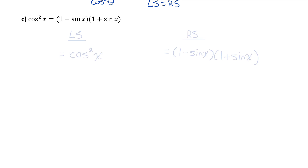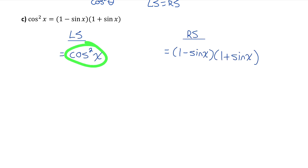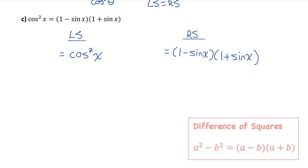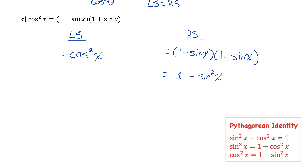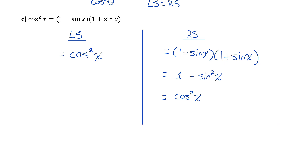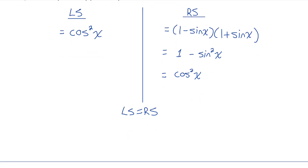I'll separate into left and right side. On the right side I see a difference of squares, which would simplify to 1 squared minus sine squared. This is a rearranged version of the Pythagorean identity: 1 minus sine squared is actually equal to cosine squared. So 1 minus sine squared of x equals cos squared of x. The left side of the equation equals the right side, so this equation is an identity.